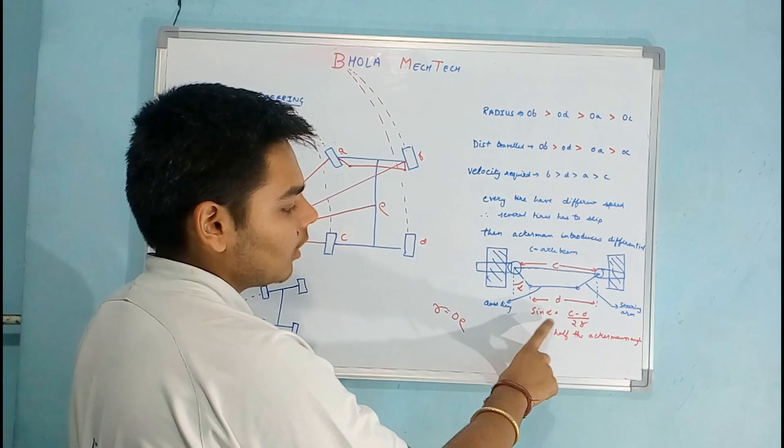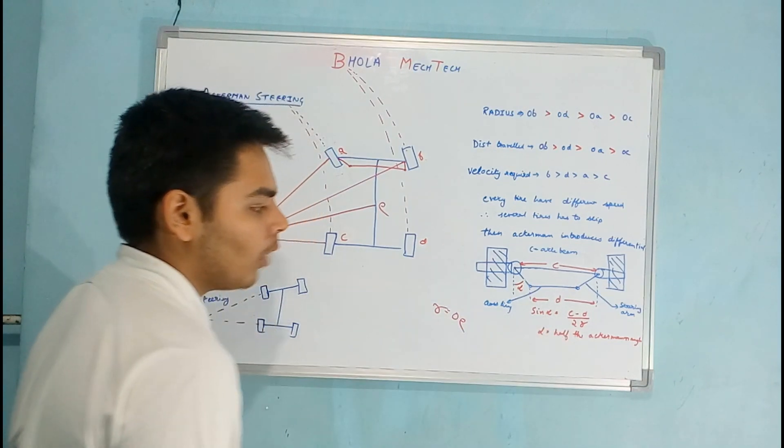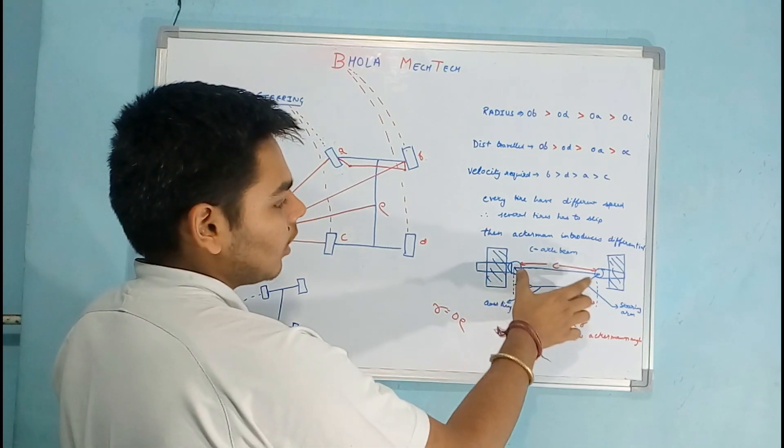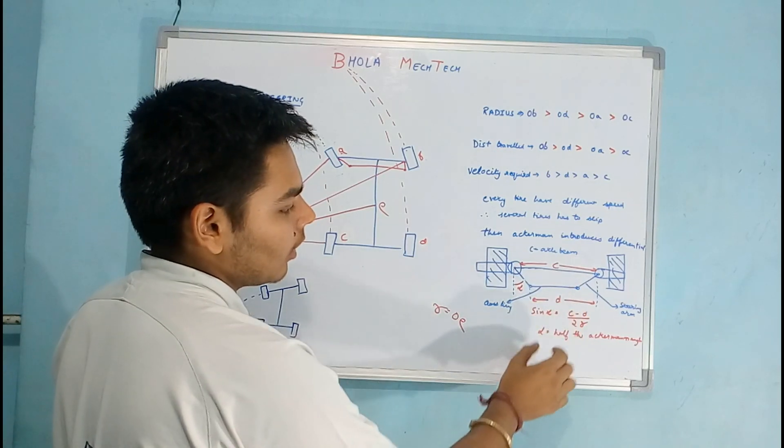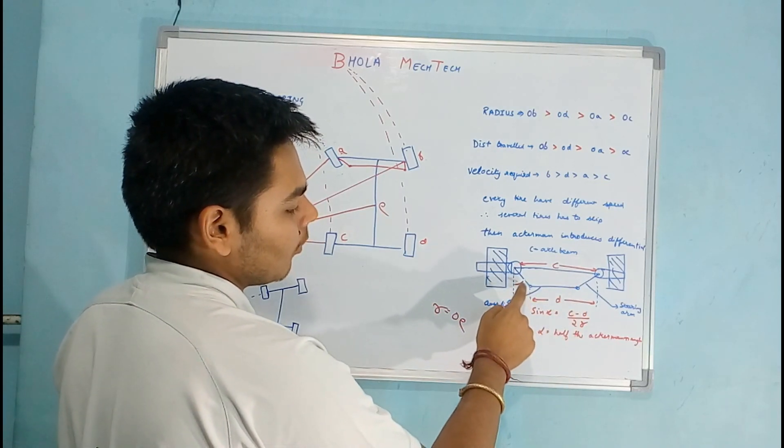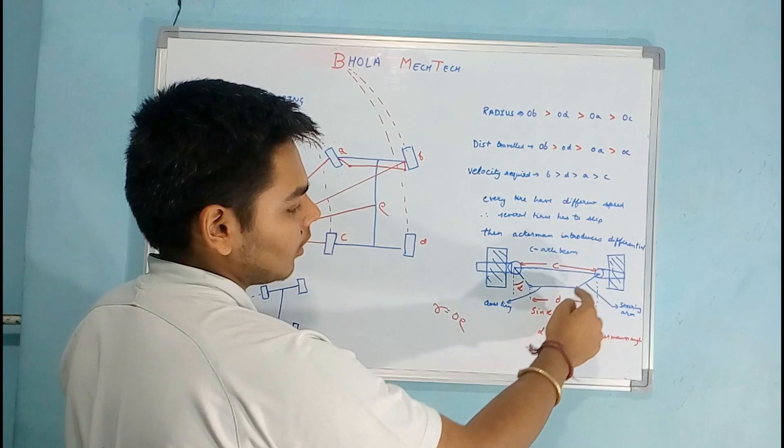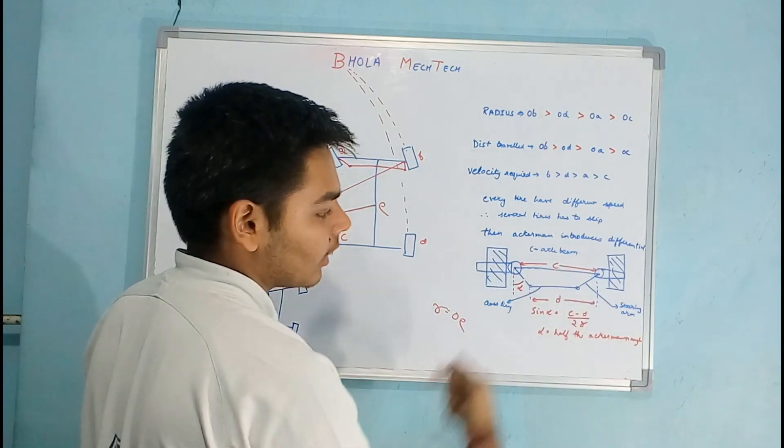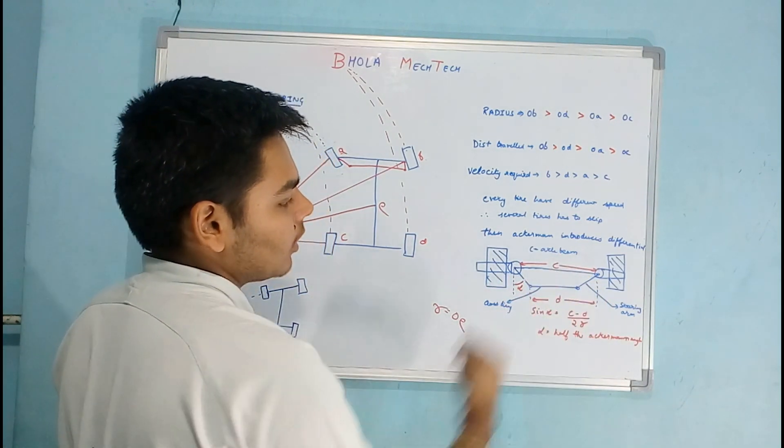So as to achieve this geometry, the mathematical formula is sin alpha equals (c - d) / (2r). C is the axle beam, d is the distance between one end of the steering arm and the other end of the another steering arm or the center of the stub axle.